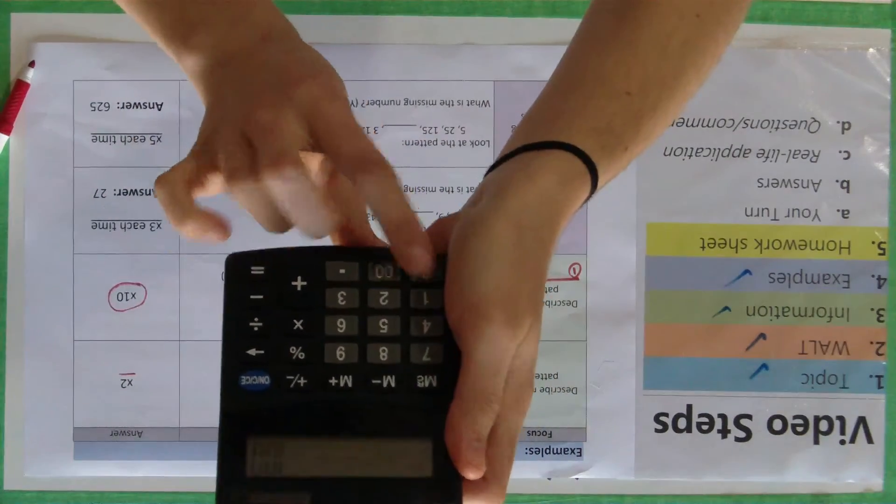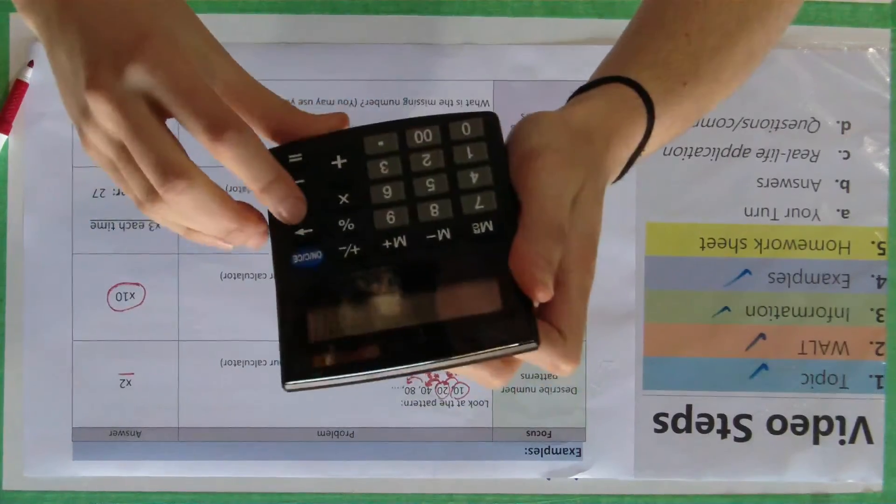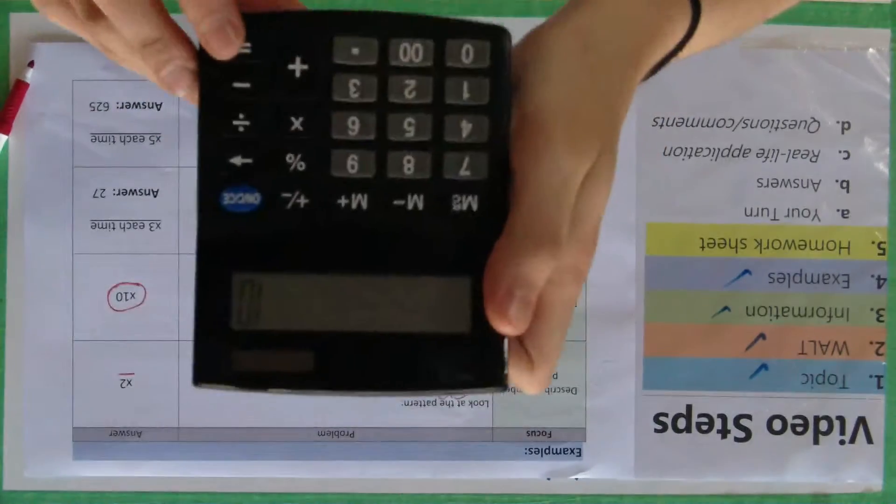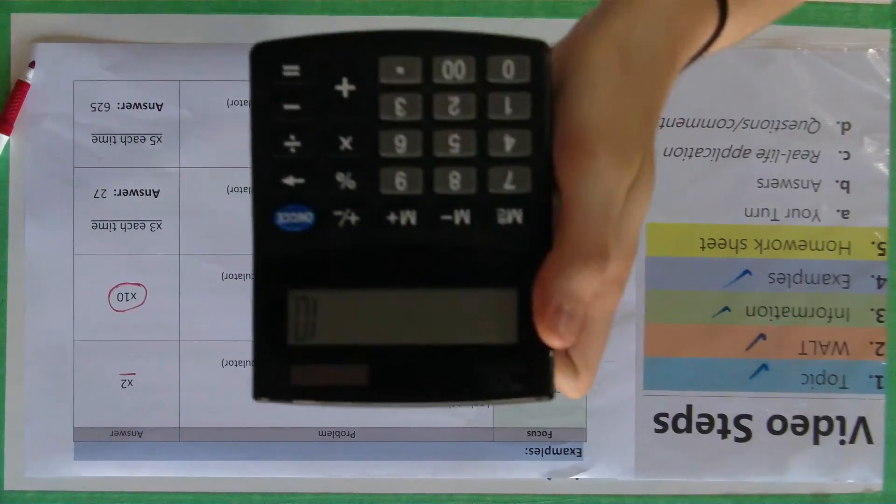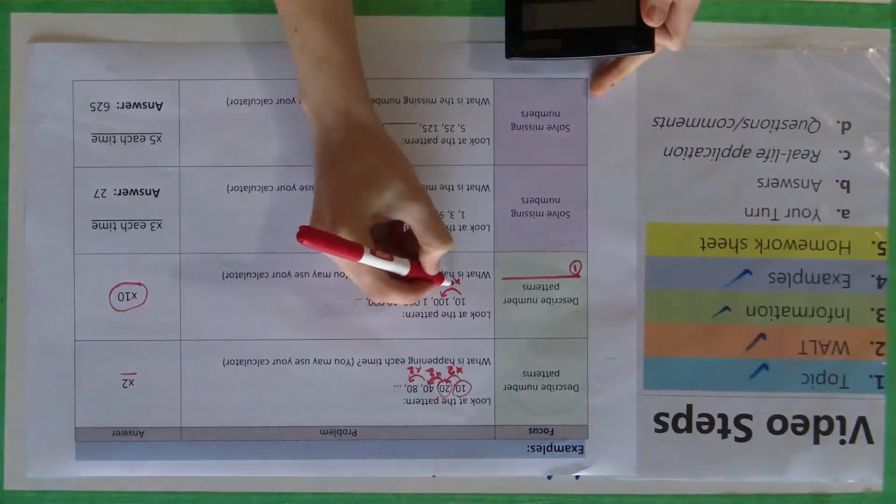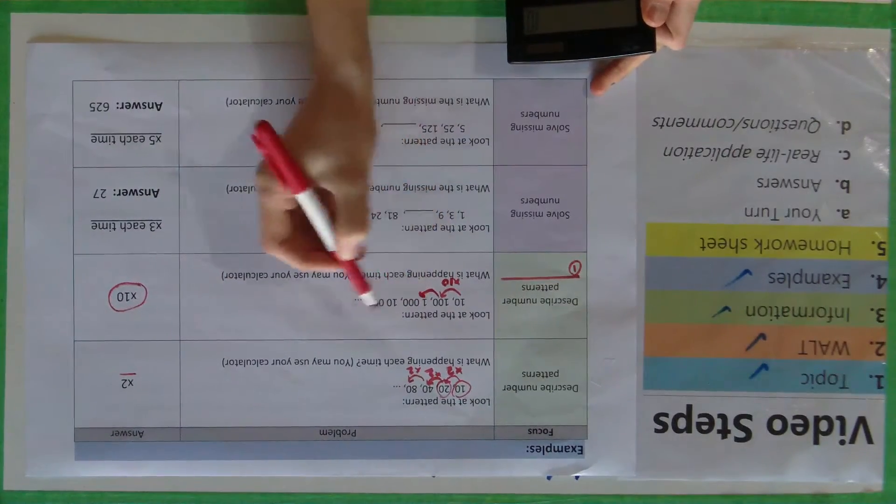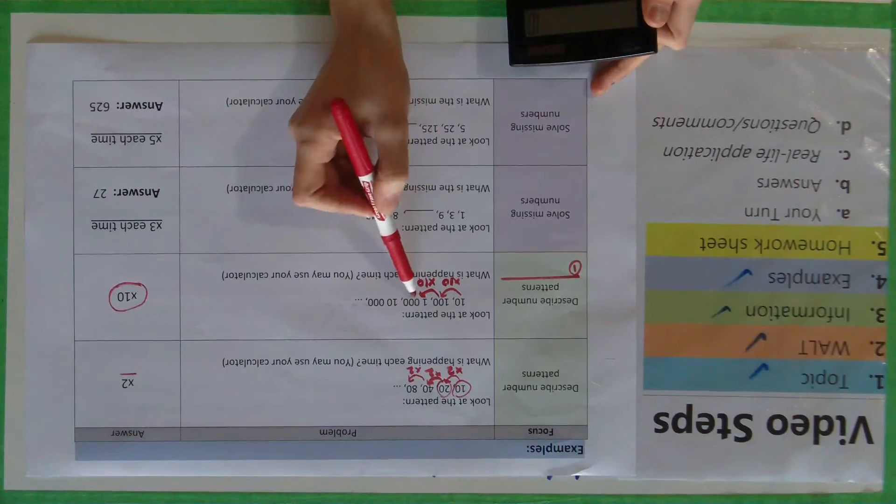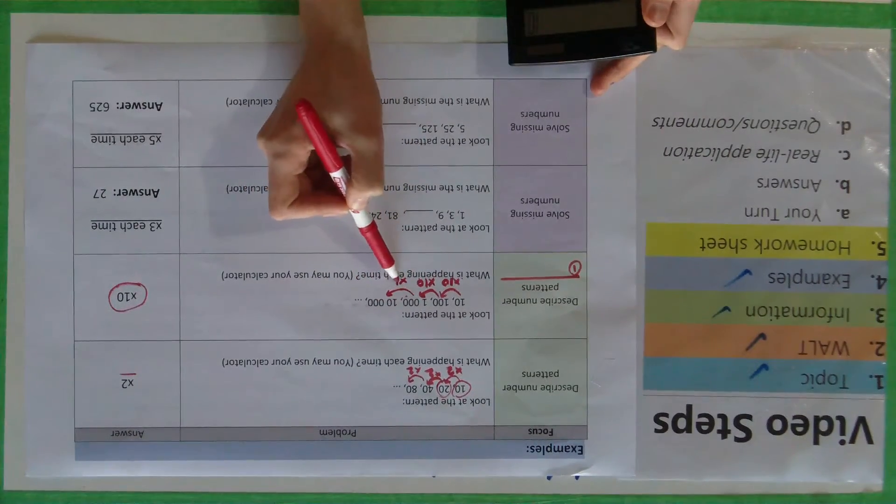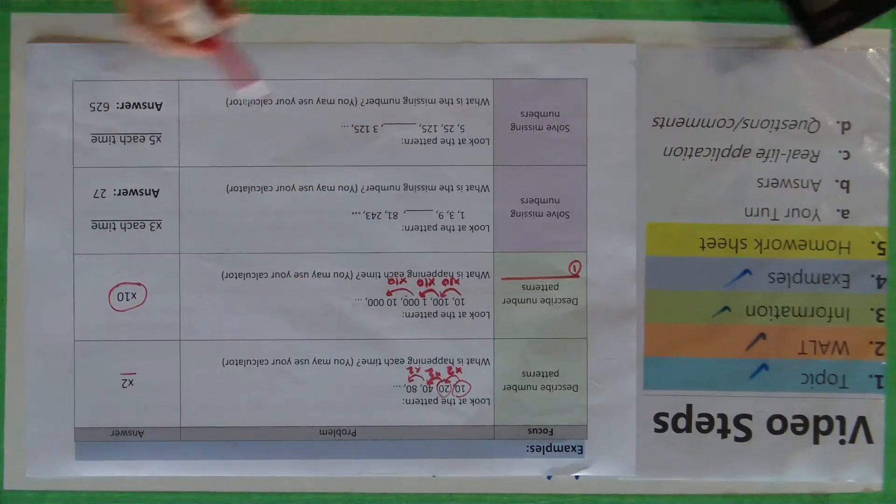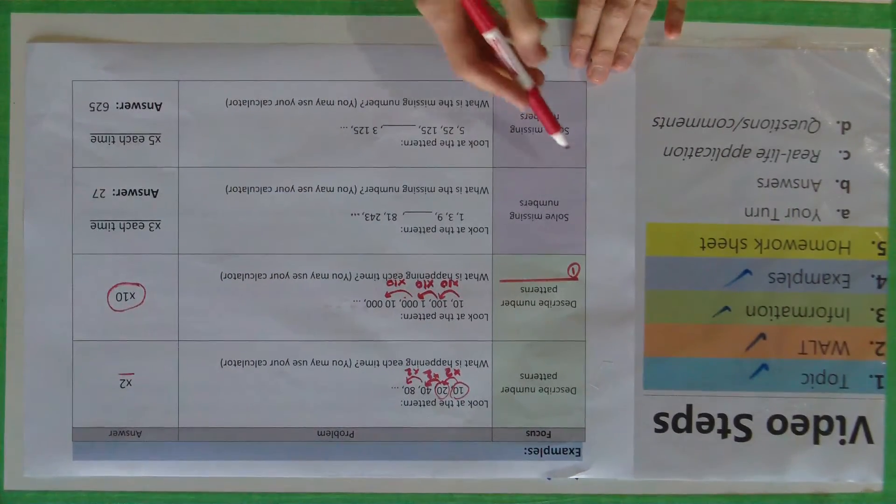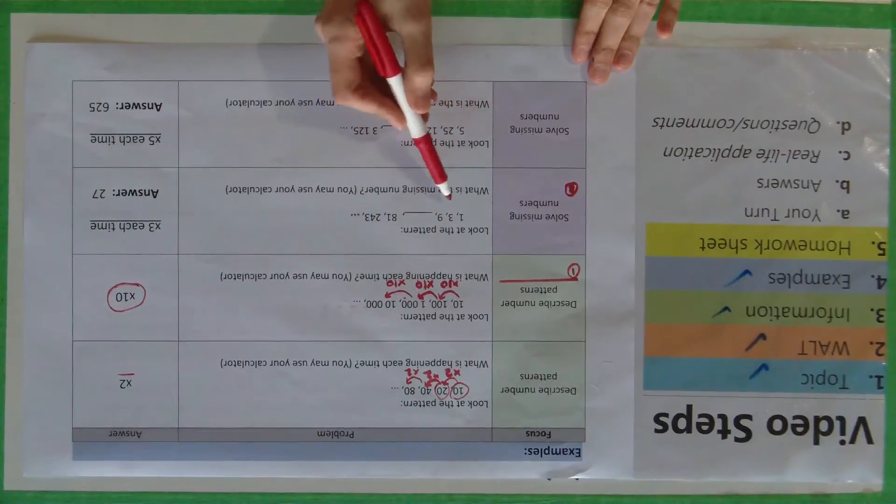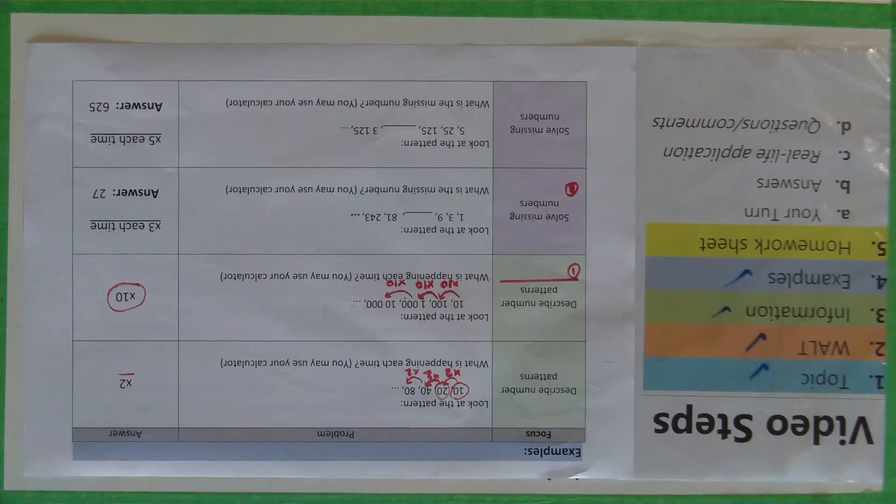So we would go 100 divided by 10 equals 10, and that's saying that each time you are multiplying the previous number by 10 and that's our pattern. So 100 times 10 is 1,000, 1,000 times 10 is 10,000. This is our second goal which is basically if you've got a pattern, what is the missing number in the pattern?